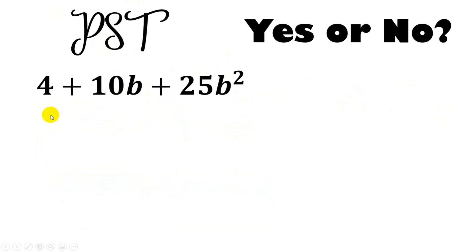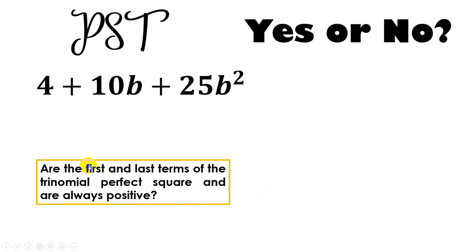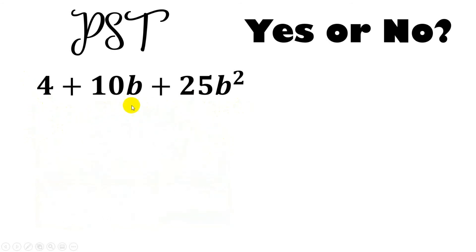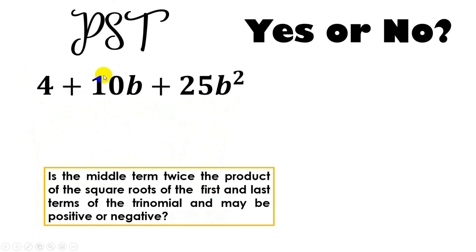Next, we have 4 plus 10b plus 25b squared. First condition or first characteristic, does 4 have a square root? Does 25b squared have a square root? The answer is yes. And are they both positive? Also, the answer is yes. Now, let's check again. Second characteristic, our middle term.